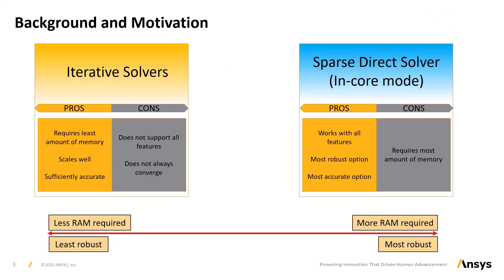On the spectrum of equation solvers, iterative solvers are on the leftmost side and the direct solvers are on the right side, and they both have their pros and cons.